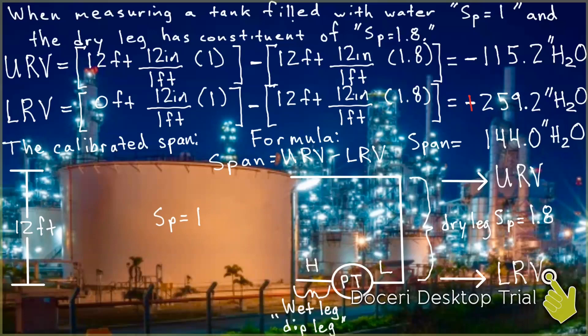So here we have negative 115.2 inches of H2O, and that red vertical line is us subtracting it from negative 259.2 inches of H2O. When we subtract a number from a negative number, we add the number because it becomes a positive number. So that's negative 115.2 inches of H2O added to 259.2 inches of H2O. Therefore the span equals 144 inches of H2O.